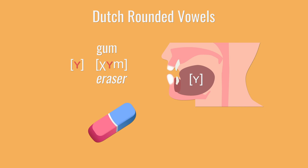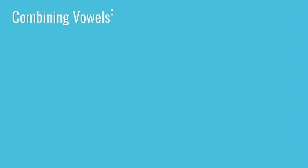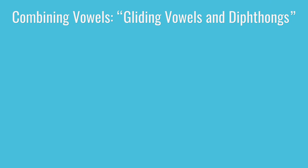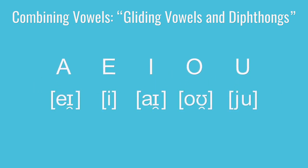And that is our last Dutch vowel, at least the last one that shows up in words on its own. The last thing we actually have to discuss are combinations of vowels known as gliding vowels and diphthongs. We have these all over the place in English. Of our so-called five vowels — A, E, I, O, and U — three of them, A, I, and O, are actually diphthongs. They're not single vowels at all. In American English at least, we go A, I, and O. So Dutch also has quite a few diphthongs, which we'll go over in a moment.